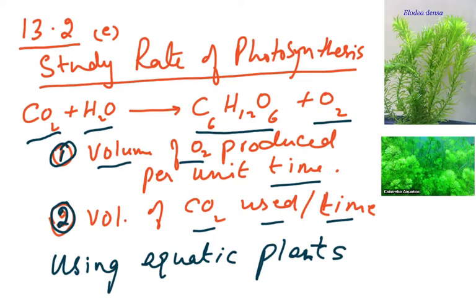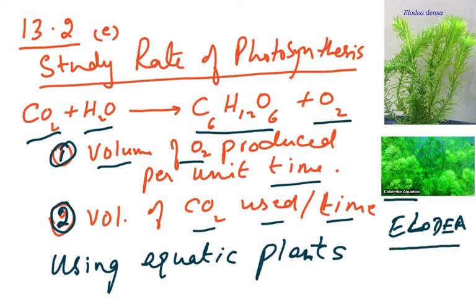It has been specified that we have to use aquatic plants such as Elodea and Cabomba. These are usually called aquarium plants — you can get them from shops that sell aquariums. These are the two plant names mentioned in your syllabus.